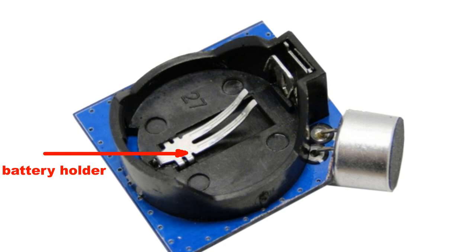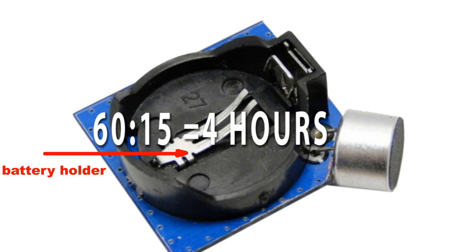A high quality CR2032 battery has a capacitance of approximately 60 milliampere hour. This device draws about 15 milliampere. Assuming that the battery keeps all this time 3 volts, the transmission will last for about 4 hours.